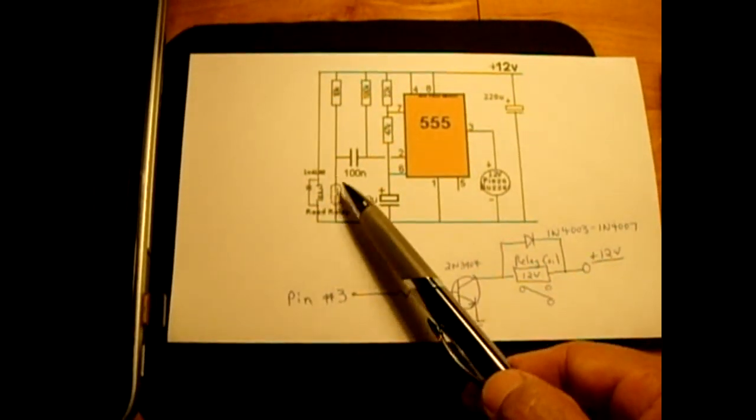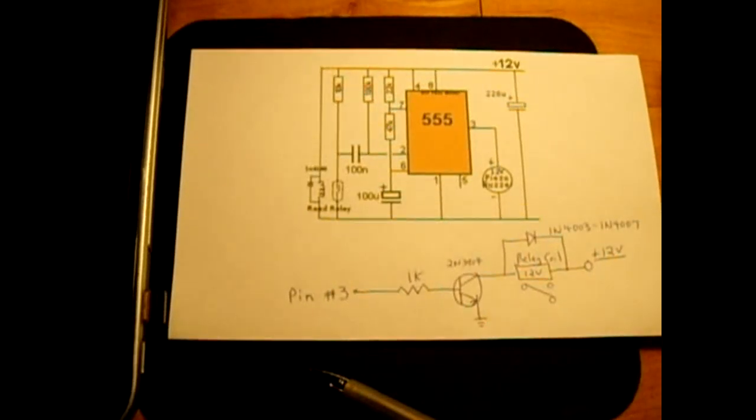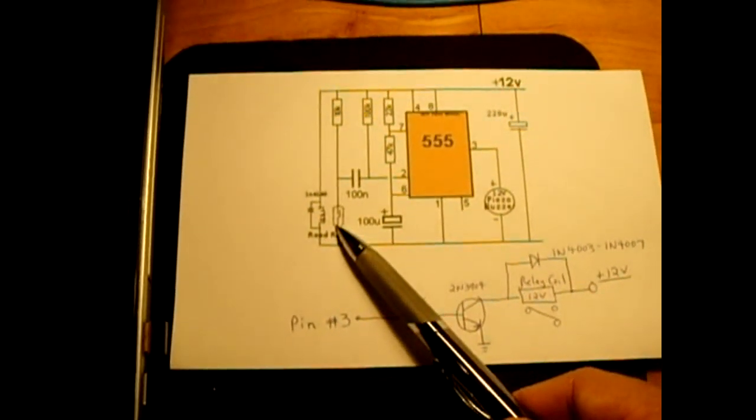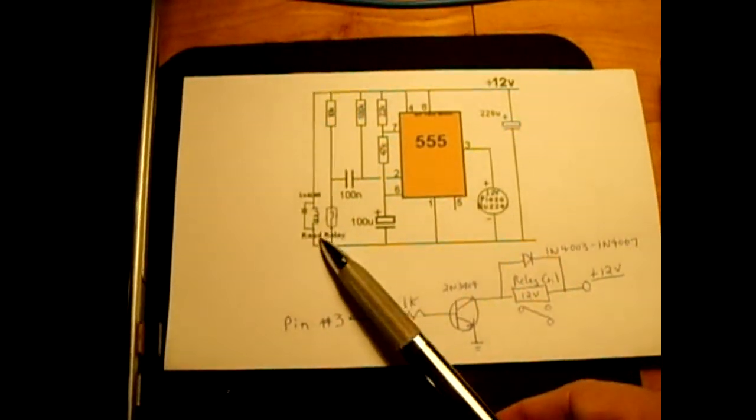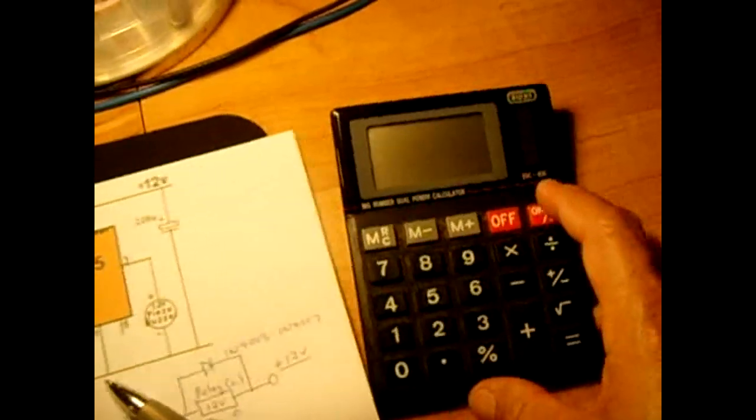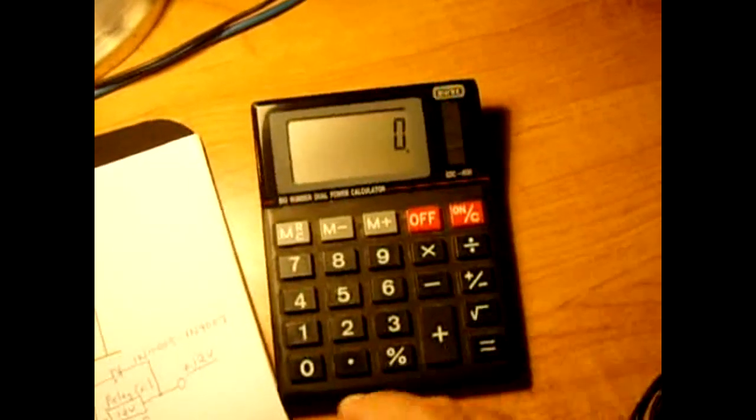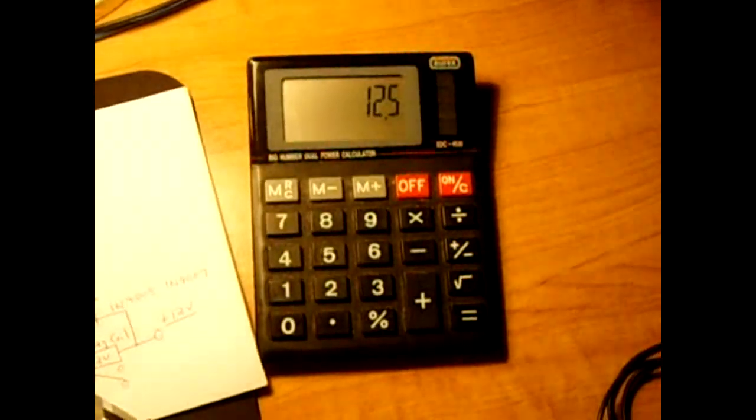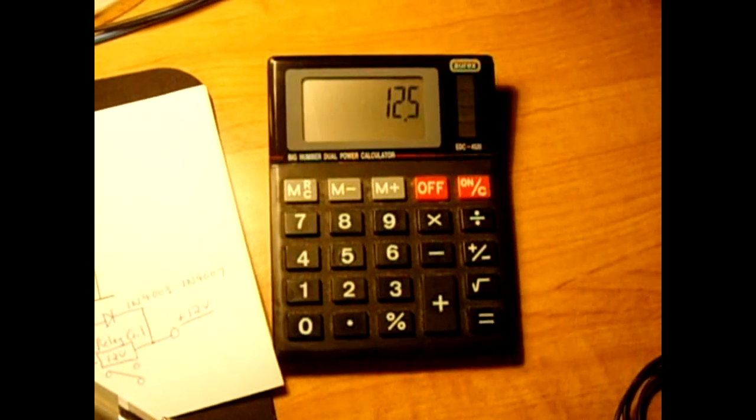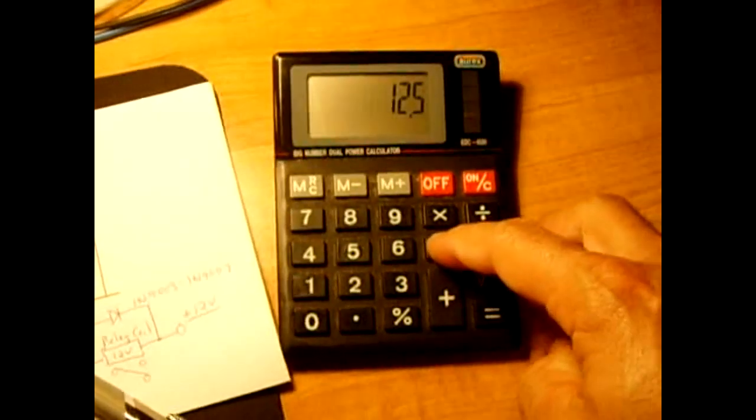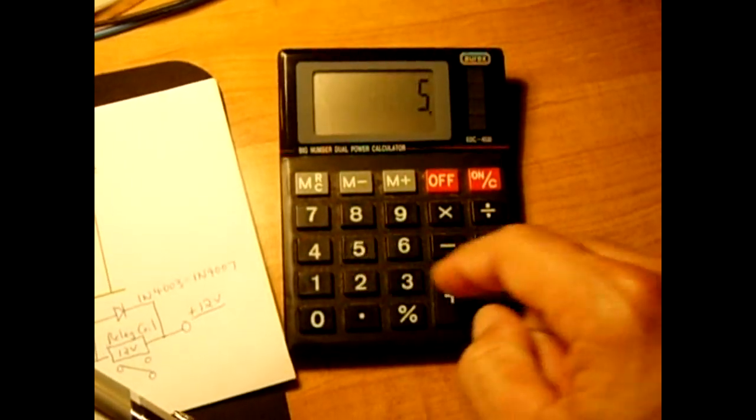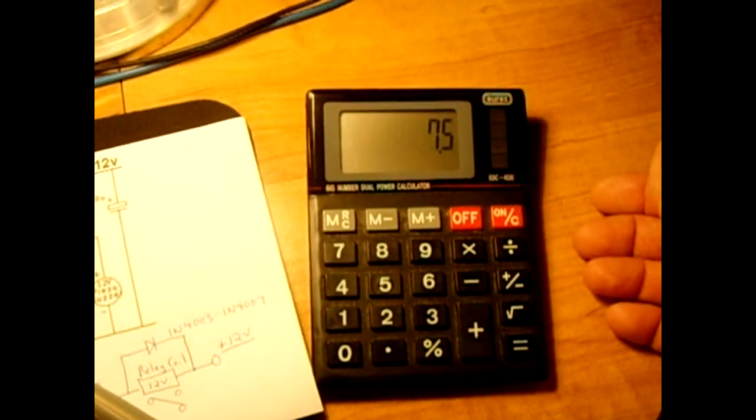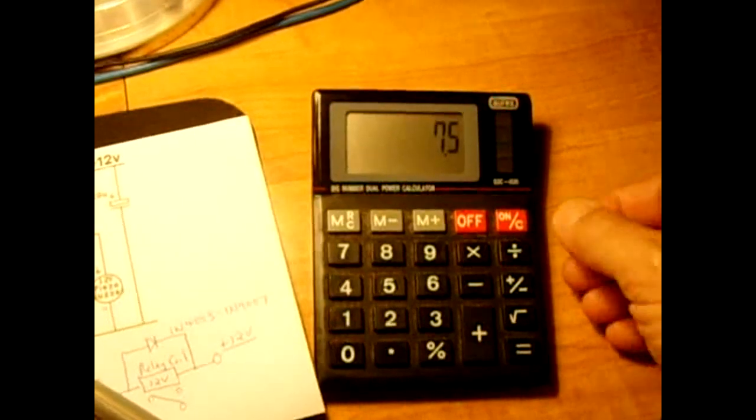Now if you don't have a 12 volt reed relay and you only have a 5 volt, you can still use that. What you would do: you would have 12.5 volts that's coming from the battery of your car. The reed relay runs on 5, so you subtract 5, and that leaves behind 7.5. Say the reed relay requires 150 milliamps.